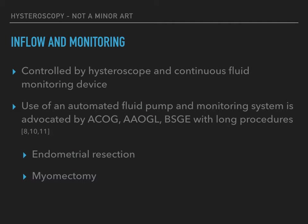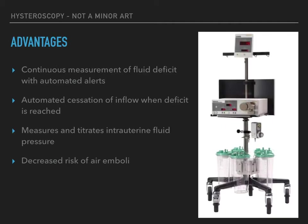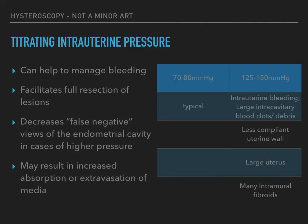Fluid is infused using the force of gravity or by placing the fluid in a pressure bag, and fluid input and output are then recorded manually. The use of an automated fluid pump with longer procedures such as endometrial resection or myomectomy is advocated by most international bodies. Automated systems have the following advantages: the fluid deficit is continually measured with automated alerts, inflow of fluid will automatically stop when the fluid deficit is reached, the intrauterine pressure is measured and can be titrated, and it reduces the risk of air emboli. Titrating intrauterine pressure is important to manage bleeding, facilitate full resection of endometrial lesions, and decrease false negative views of the endometrial cavity.